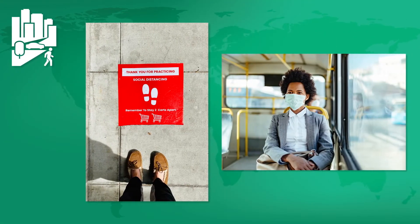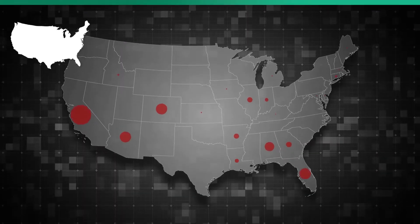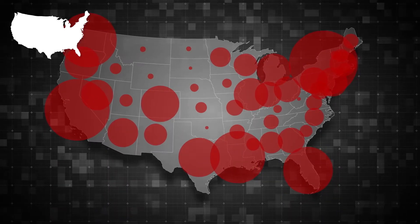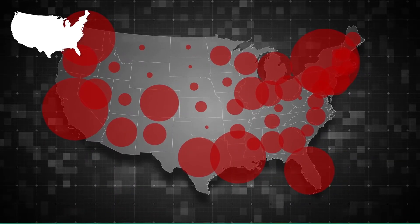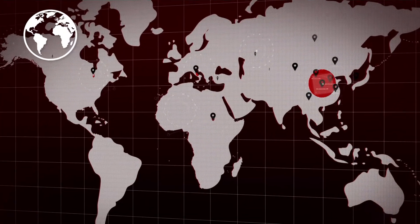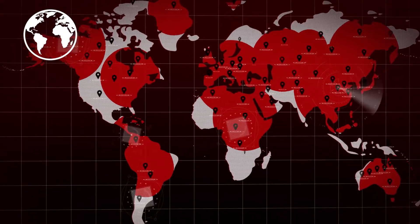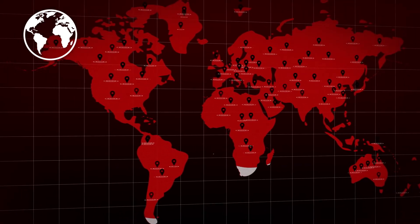At the local scale, geographers studied how people were responding to the pandemic, evaluating the effectiveness of responses like enforcing masks and social distancing on slowing the spread in individual cities or towns. At the national scale, geographers analyzed how the movement of people spread the pandemic across entire countries. And at the global scale, geographers examined how international trade and migration spread the virus across borders.